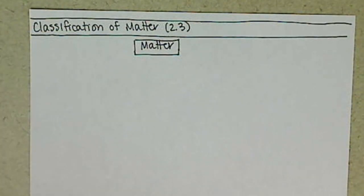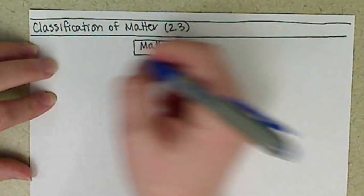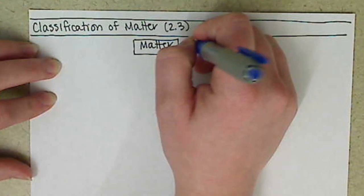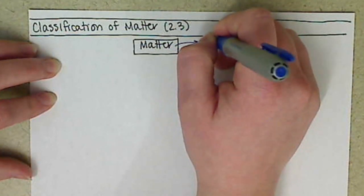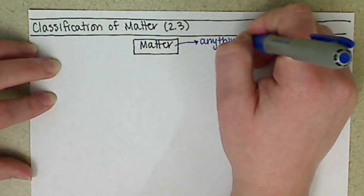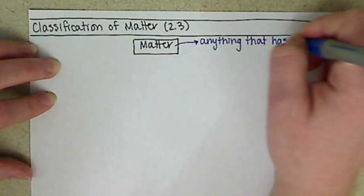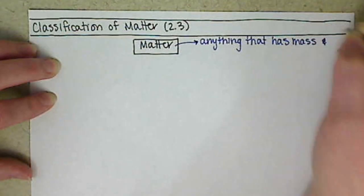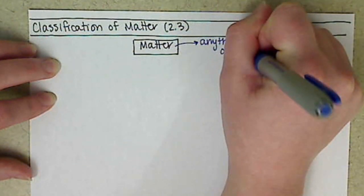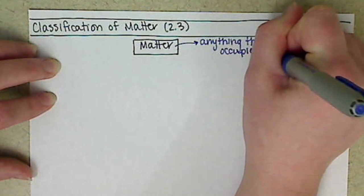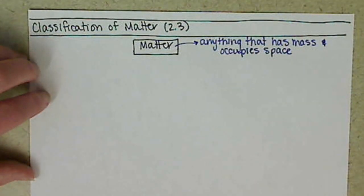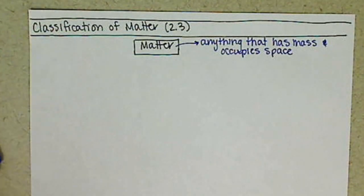Matter is basically anything that's going to have mass and occupy space. Things that aren't matter, say thoughts or feelings, those don't have mass, they don't occupy space, so they don't fall under this category.